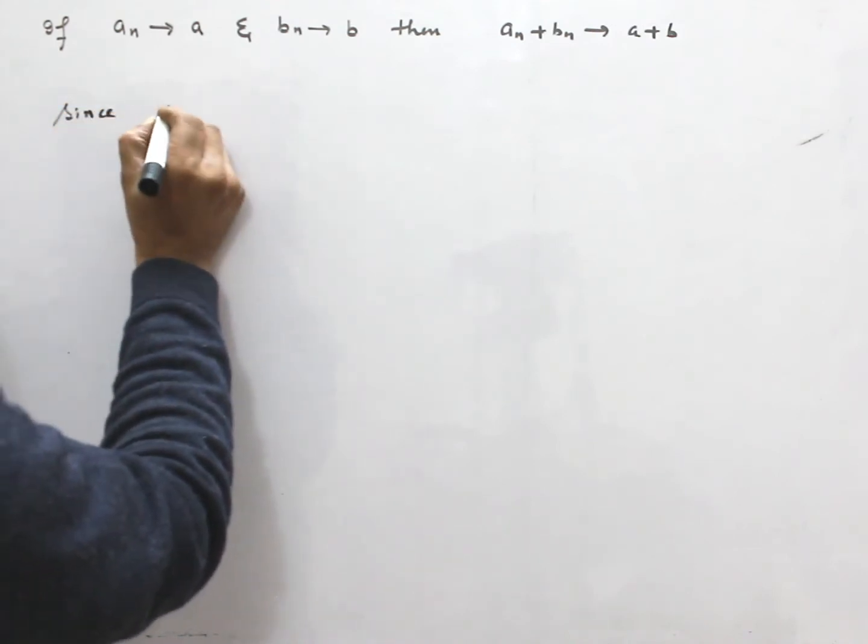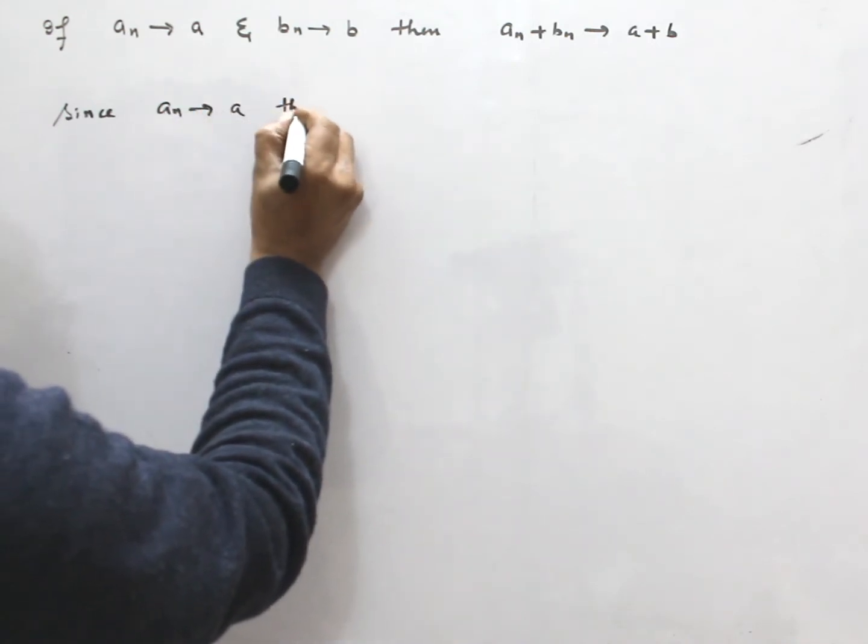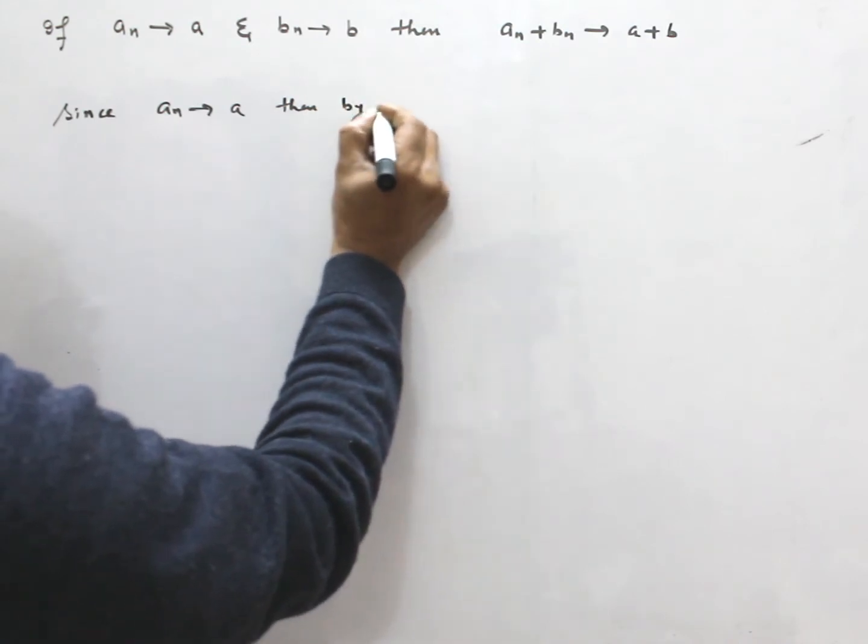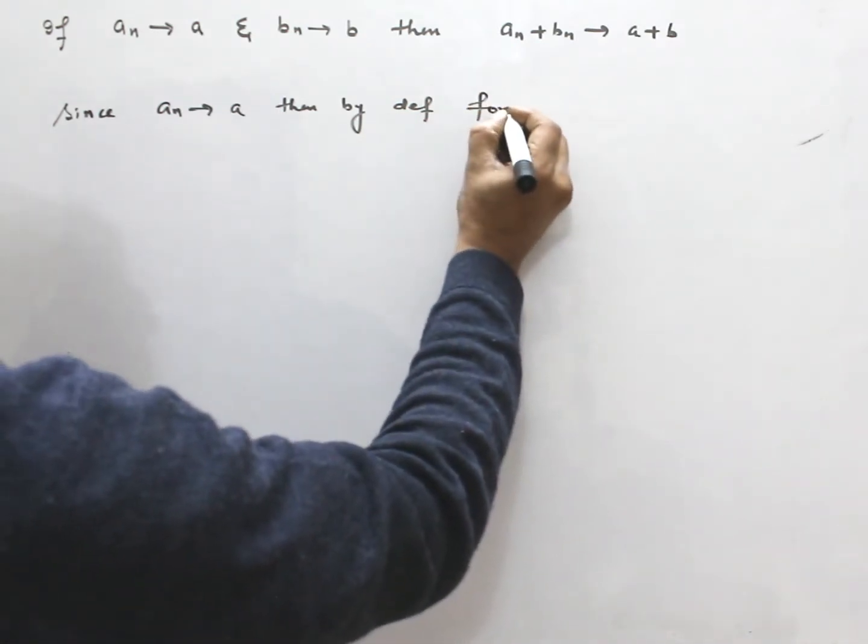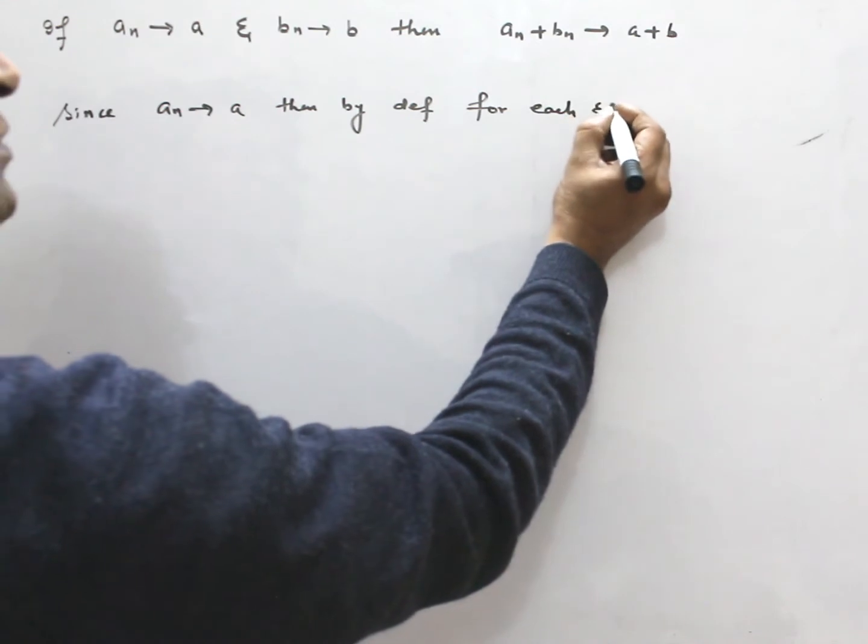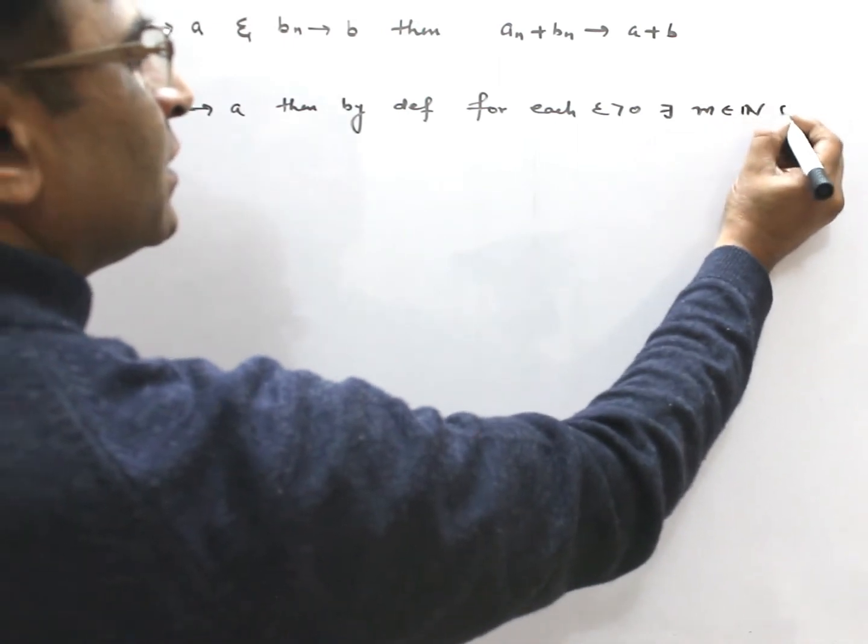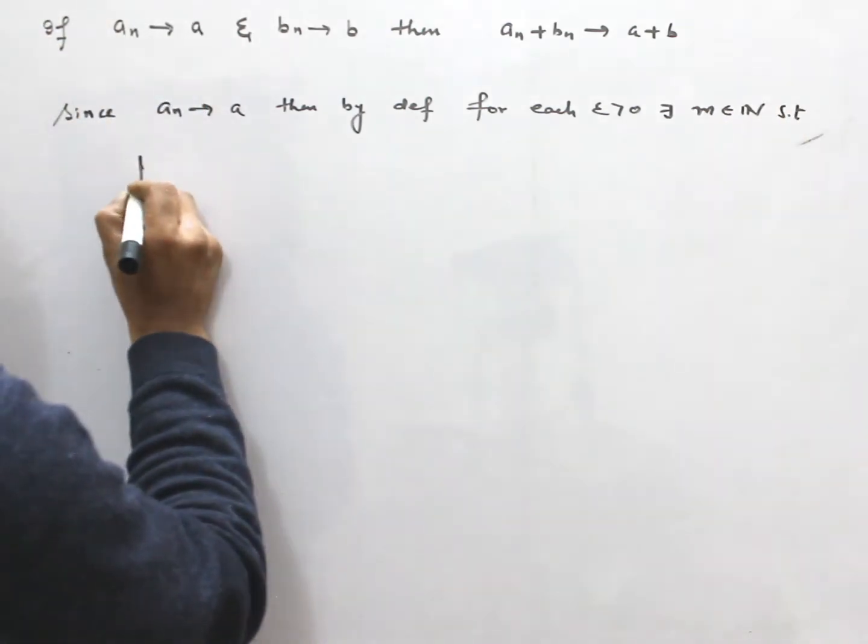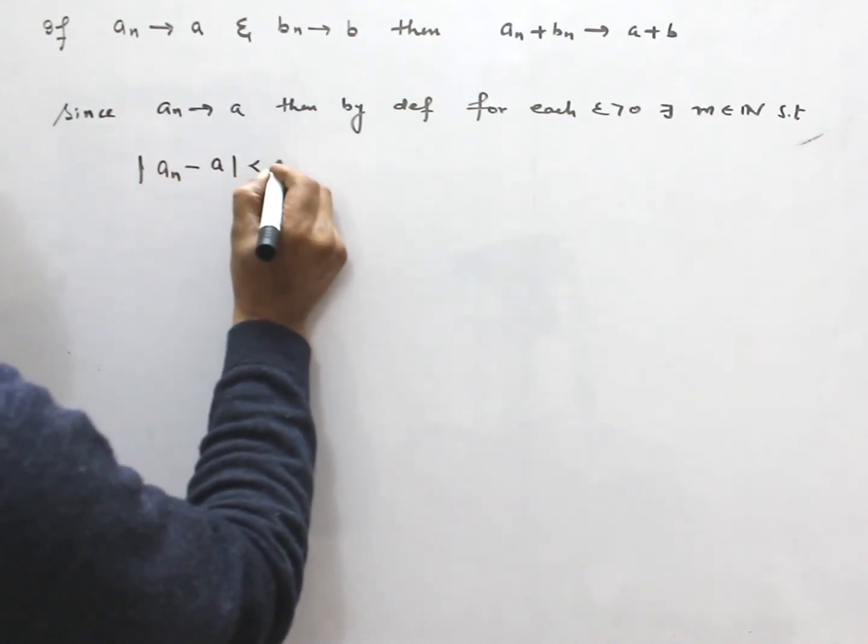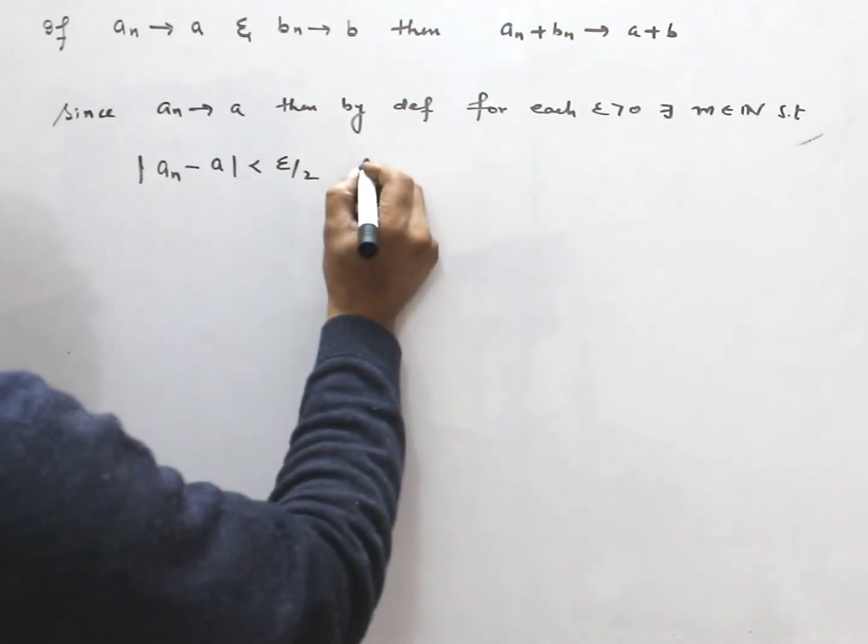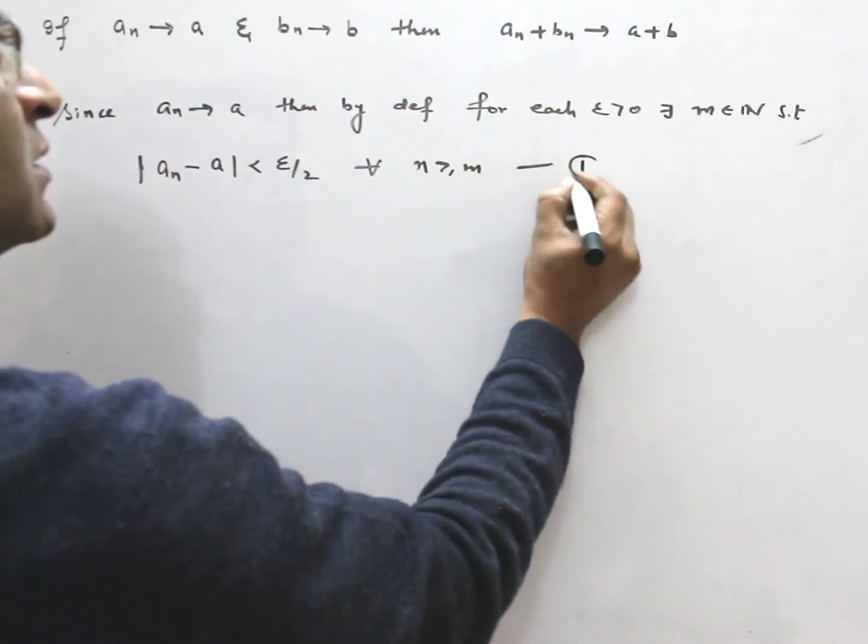Since An converge to A, therefore, by definition, for each epsilon positive, there exists M1 in N such that |An - A| < ε/2, for all N greater than M1. This is equation 1.